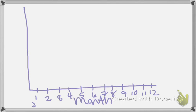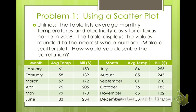And then the cost—I'm going to start at $100 because the cheapest month was $110, and the most expensive was $255. I'm going to go by 20s: $120, $140, $160, $180, $200, $220, $240.